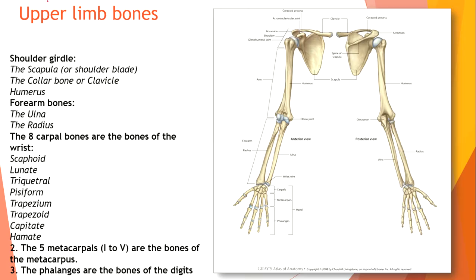This is the normal anatomy of upper limb bones. The shoulder girdle has the scapula, the clavicle, and the humerus. The forearm bones are the ulna and radius. The eight carpal bones of the wrist are: scaphoid, lunate, triquetrum, pisiform, trapezium, trapezoid, capitate, and hamate. The five metacarpals are the bones of the metacarpus, and the phalanges are the bones of the digits.